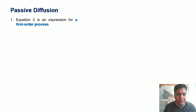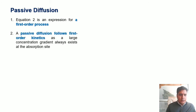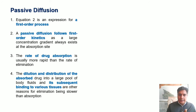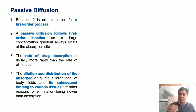Equation 2 is an expression for a first-order process, meaning passive diffusion follows first-order kinetics because a large concentration gradient always exists at the absorption site. The rate of drug absorption is usually more rapid than the rate of elimination. The dilution and distribution of absorbed drug into a large pool of body fluid and its binding to various tissues are additional reasons why elimination is slower than absorption.